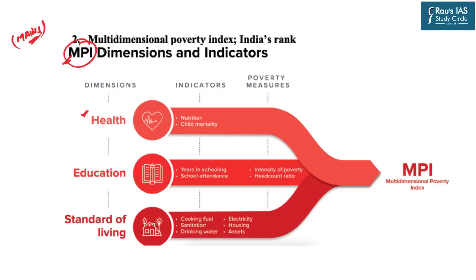For example, whenever you have to think about poverty — what are the things that come to mind to eliminate or eradicate poverty in India? Don't we primarily think of money and income levels? That is why this particular report came up with the view that poverty is not unidimensional — it is not just related to money. Poverty is a multidimensional phenomenon.